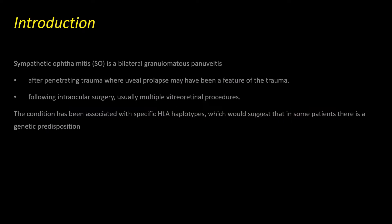The topic for today's lecture is Sympathetic Ophthalmitis. Much of the literature is taken from the ninth edition of Kanski's Clinical Ophthalmology. Sympathetic Ophthalmitis is a bilateral granulomatous pan uveitis which occurs after a penetrating trauma where uveal prolapse has been a feature, or following intraocular surgery — usually vitreoretinal procedures performed multiple times. The condition has been associated with specific HLA haplotypes HLA-DR1 and HLA-DR4, suggesting that in some patients there is a genetic predisposition.